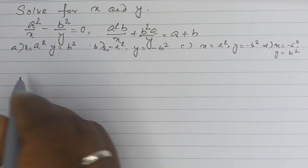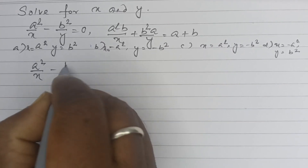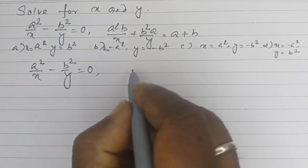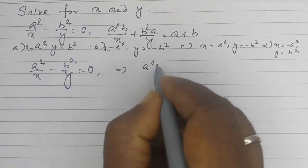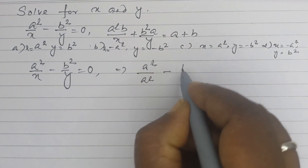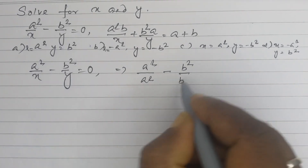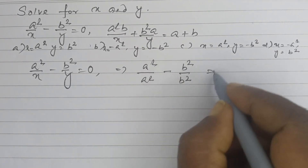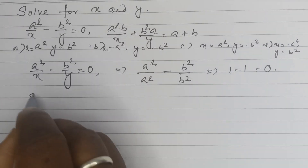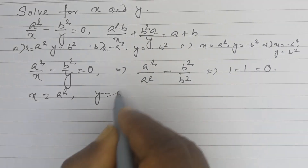From the first equation, a squared by x minus b squared by y is equal to 0. Keeping x as a squared and y as b squared, this gives 1 minus 1, which equals 0. So x is equal to a squared and y is equal to b squared.